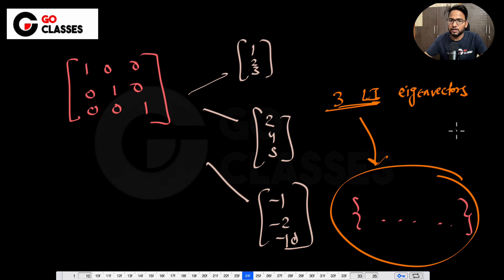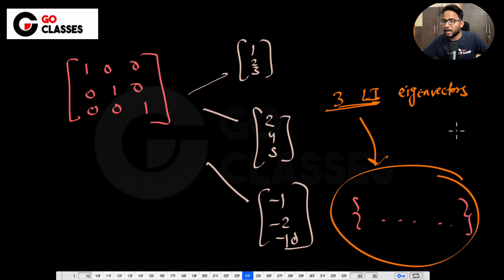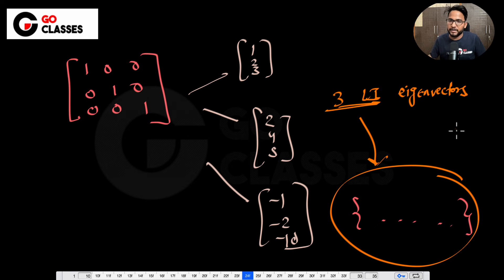I hope you understood. Whenever we say there are 2 or 5 eigenvectors, it generally means there are infinitely many eigenvectors. We will not be interested in how many total eigenvectors there are; we will be more interested in how many of them are linearly independent.